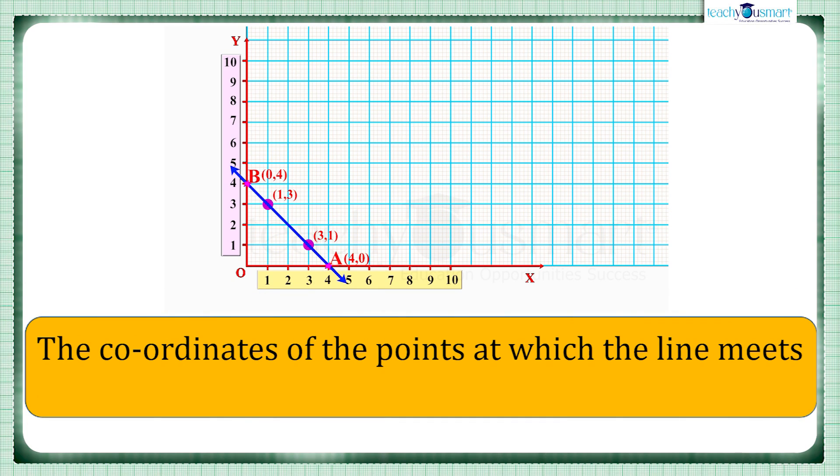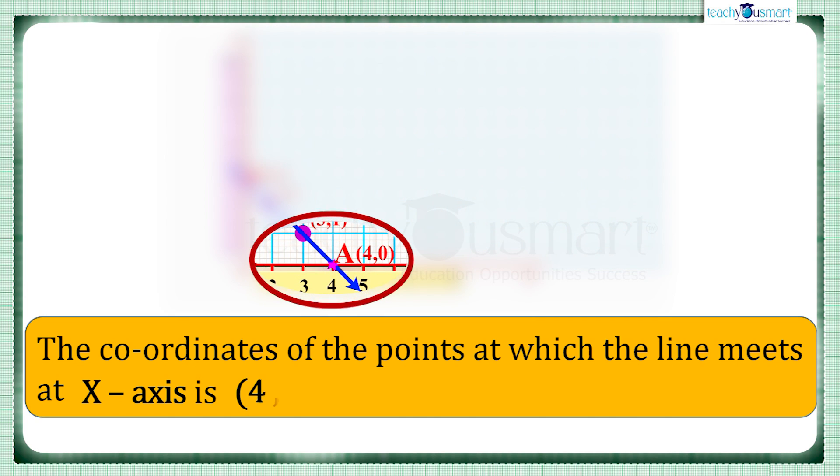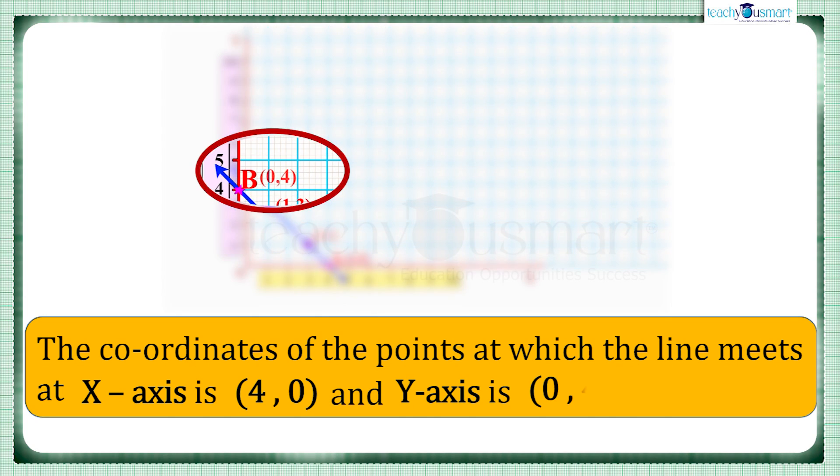That is, the coordinates of the points at which the line meets at the x-axis is (4,0), and at the y-axis is (0,4).